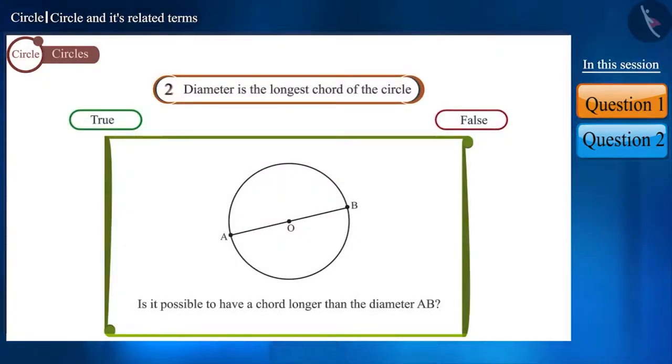You will see that in the circle, if we draw more chords parallel to this diameter, the chords closer to the center are longer than the chords located away from the center. And the diameter, which is the chord that passes through the center, is the longest chord of the circle.